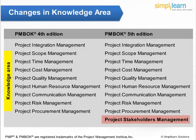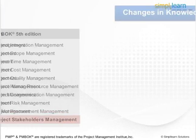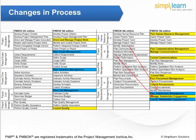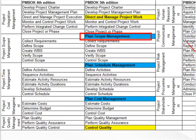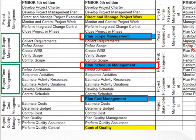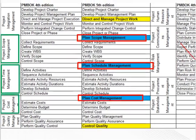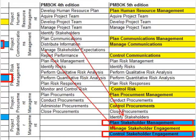Apart from this, 5 processes have also been added. The additional processes are: Plan Scope Management in Project Scope Management, Plan Schedule Management in Project Time Management, Plan Cost Management in Project Cost Management, and Plan Stakeholder Management and Control Stakeholder Engagement under the Project Stakeholder Management knowledge area. These are highlighted in blue.